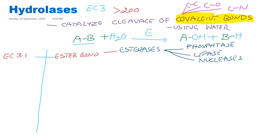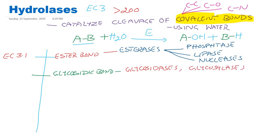Hydrolases can also break bonds between sugars — they can break glycosidic bonds. So they are commonly known as Glycosidases. In DNA they are known as Glycosylases. These Glycosidases break down carbohydrates. In the case of DNA they are called DNA Glycosylases. They belong to enzyme commission 3-2, subclassification 2.